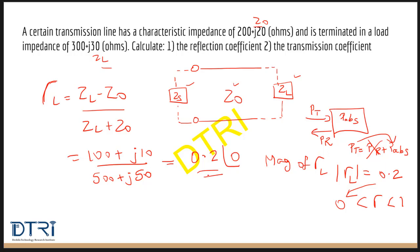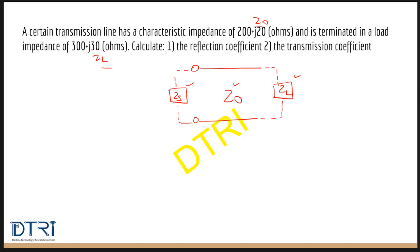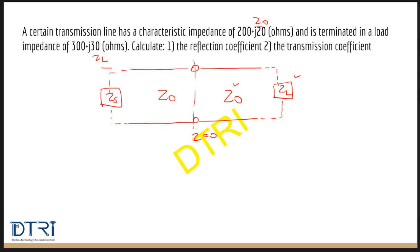Now let us solve for the transmission coefficient. Compared to the previous circuit, we add another transmission line. I will change the notation slightly: the first transmission line has characteristic impedance Z01 and the second has Z02. The source moves further to the left. We can apply the transmission coefficient equation, which is T equals 1 plus gamma. However, the value we have is gamma L, so we cannot apply this equation directly without making some assumptions.